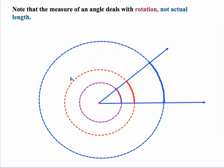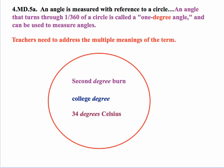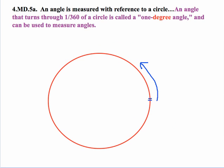The second statement in part A states that an angle that turns through 1/360th of a circle is called a one degree angle and can be used to measure angles. Now it's important to address the multiple meanings of the term degree because it does have several meanings outside of mathematics and even within mathematics. So for example in medicine you could have a second degree burn. In academics a degree can refer to achievements such as a college degree. And even within mathematics degree is a unit of measure for temperature. And now we're using degree as a unit of measure but for rotation.